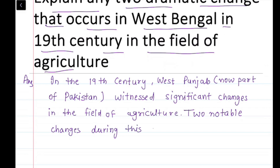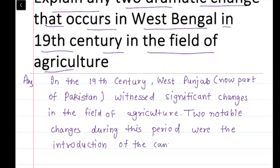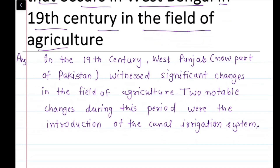During this period, one change was the introduction of the Canal Irrigation System. And the second change was the expansion of cash crop cultivation.